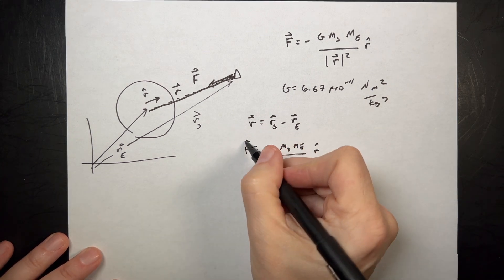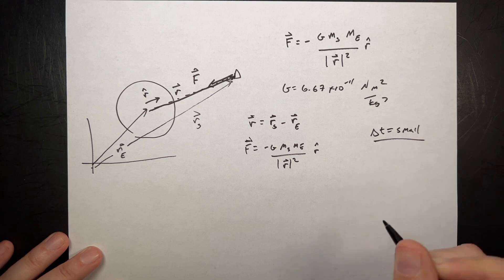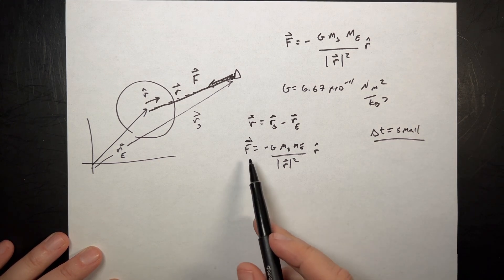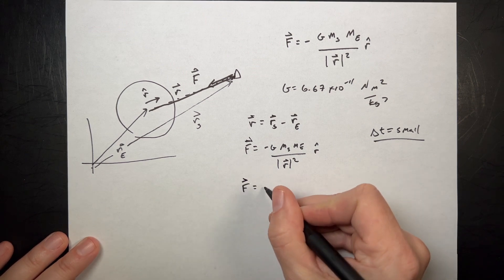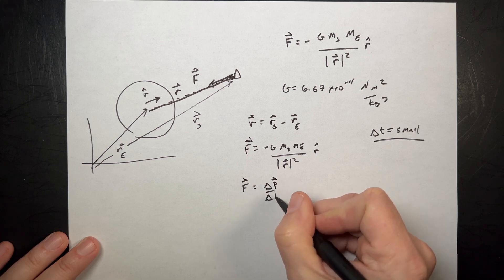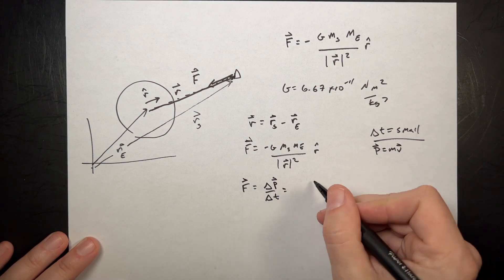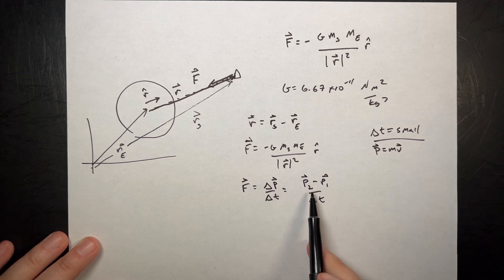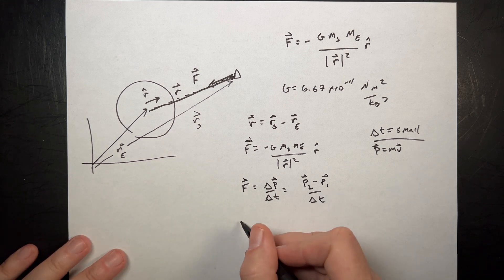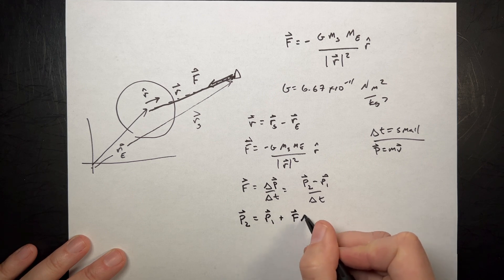Now I can break this problem into a short time interval. Delta T is small — small enough that I can assume the force is constant over that time interval. If the force is constant, I can write F as the change in momentum with respect to time. Momentum is mass times velocity. Over that small delta T, I can write this as P2 minus P1 over delta T. Solving for P2: P2 equals P1 plus F times delta T.